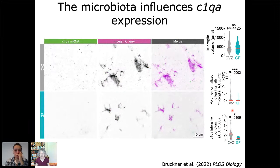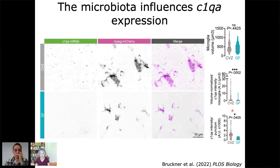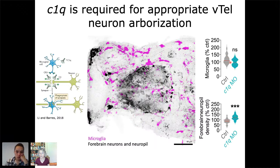To test that the complement factor family is really critical in microglia for this process, Joseph knocked down C1q using a morpholino. The number of microglia was unchanged, but neuropil density was increased — just as in the germ-free situation — very strongly suggesting this is the pathway by which microglial cells regulate the extent of arborization of these V-tell neurons.